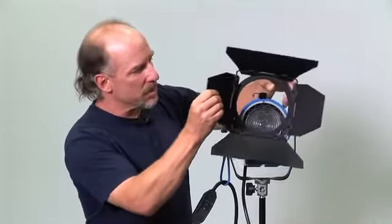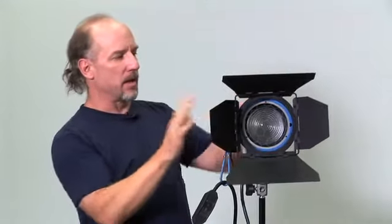These are the four leaf barn door systems. They drop right in and there's a spring-loaded latch to hold them in the front of the light.